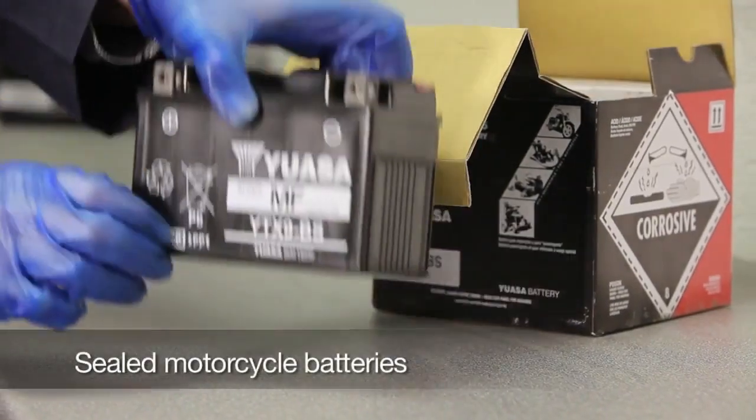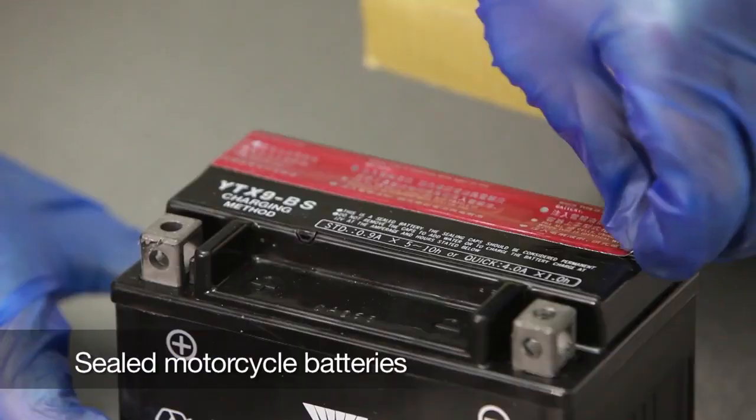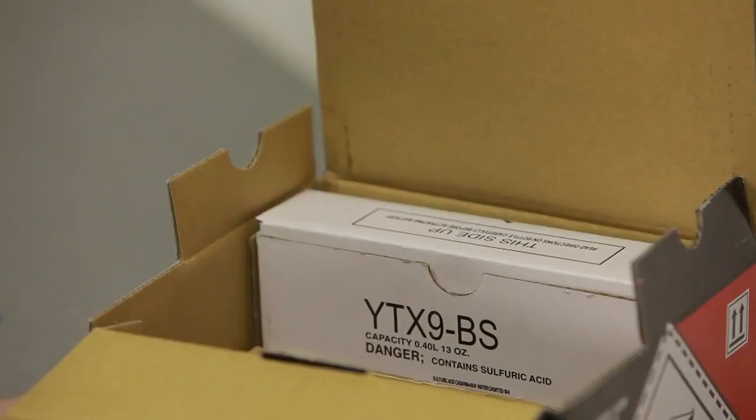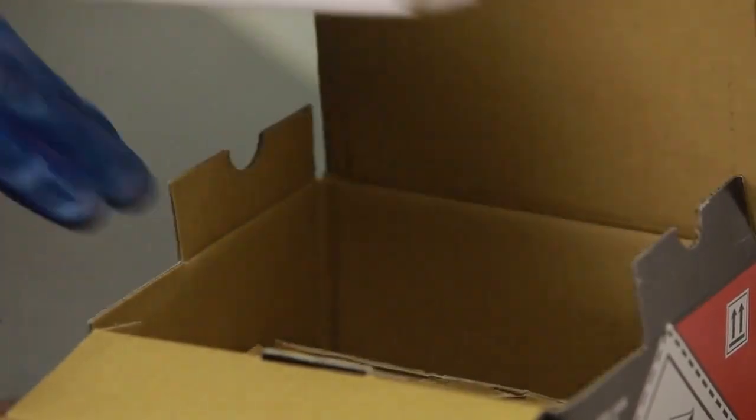To charge a sealed battery, again place the battery on a level surface and remove the sealing tape covering the filler ports. Remove the electrolyte container from the box.